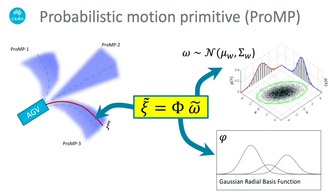Very specifically, we use a weighted Gaussian radial basis function to represent the distribution. Each weight sample encodes a single trajectory sample for a given basis function set. The weight distribution generates a trajectory distribution which then represents a single probabilistic motion primitive.